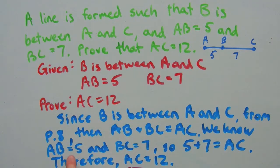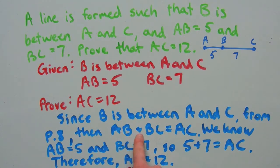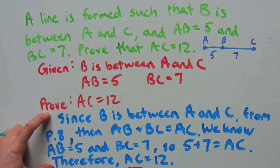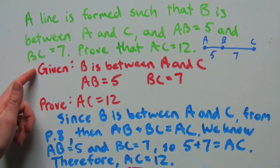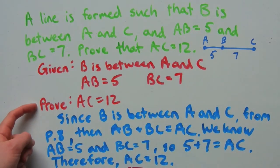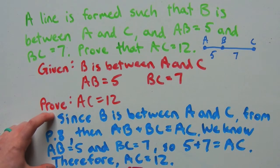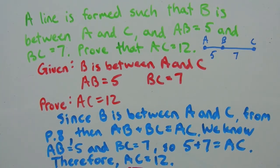Since AB equals 5 and BC equals 7, five plus seven equals AC using the segment addition postulate, therefore AC equals 12 because five plus seven equals 12. Our proof is the paragraph where we listed the given, illustrated it, stated what needed to be proved, and developed our steps. This was a quick introduction into proofs, and we're going to be using them a lot in the rest of this video series.